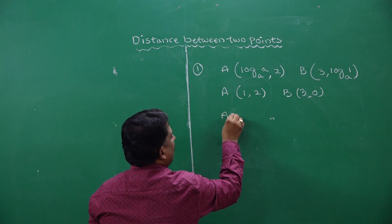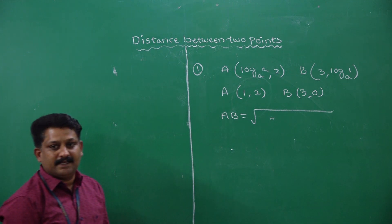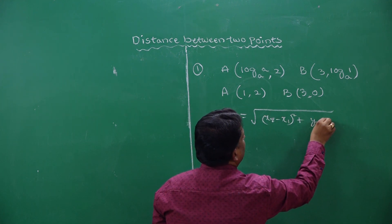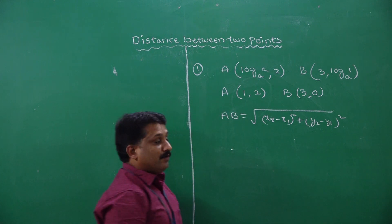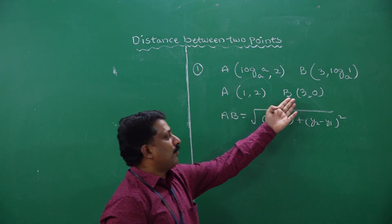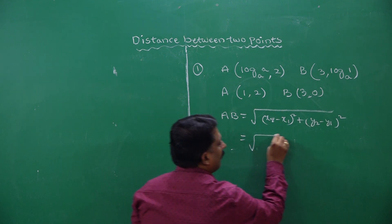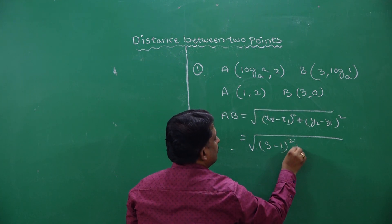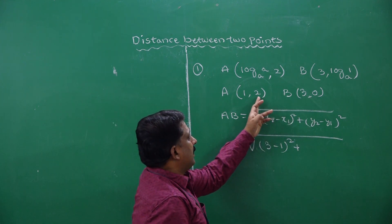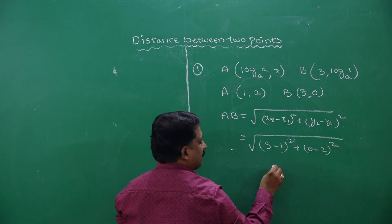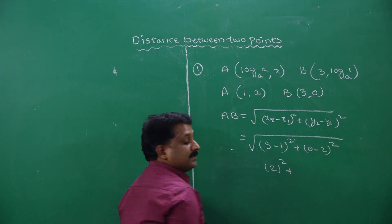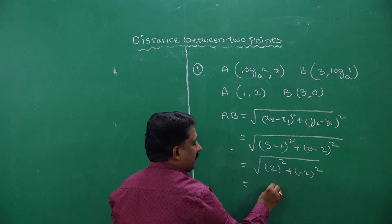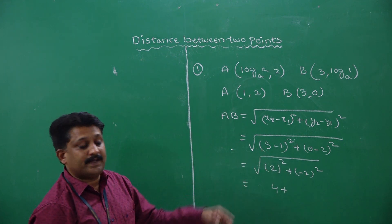Now we have a formula to find out the distance between 2 points: root of (x2 minus x1) whole square plus (y2 minus y1) whole square. Substituting: (3 minus 1) whole square plus (0 minus 2) whole square, which is 2 squared plus minus 2 squared, giving us 4 plus 4.